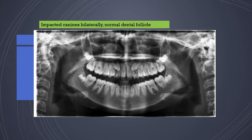Impacted canines, for example, are seen here bilaterally with a normal dental follicle. The dental follicle is the space around an unerupted tooth and should not be greater than 5 mm. If it is greater than 5 mm, it may indicate a cyst — most likely a dentigerous cyst.